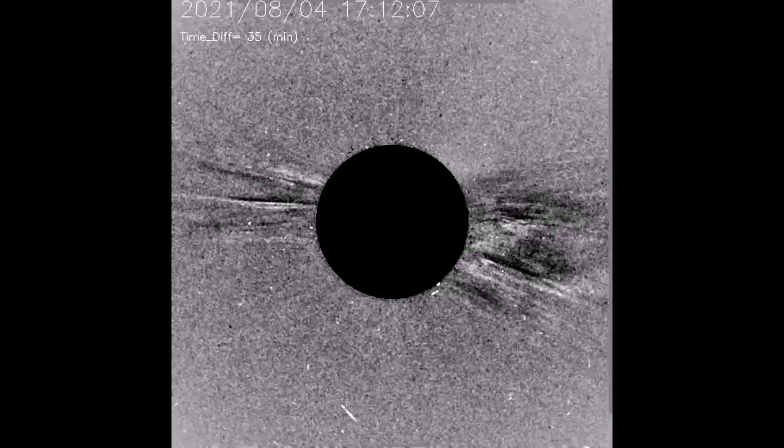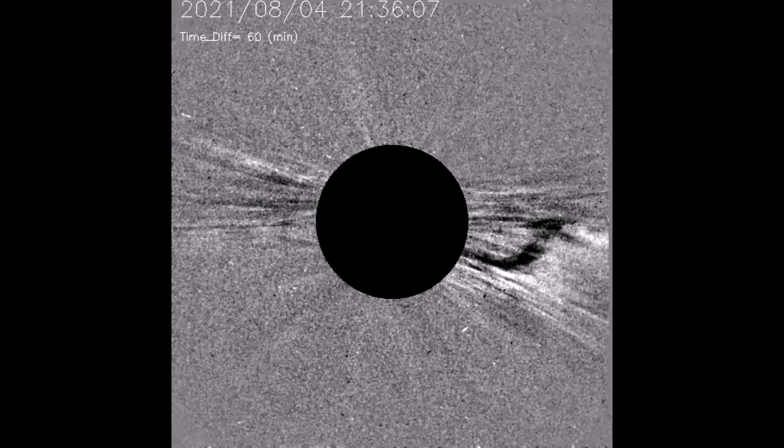Observed through the difference filter, a bit of pareidolia kicks in as a snake anomaly is seen in the solar flare.